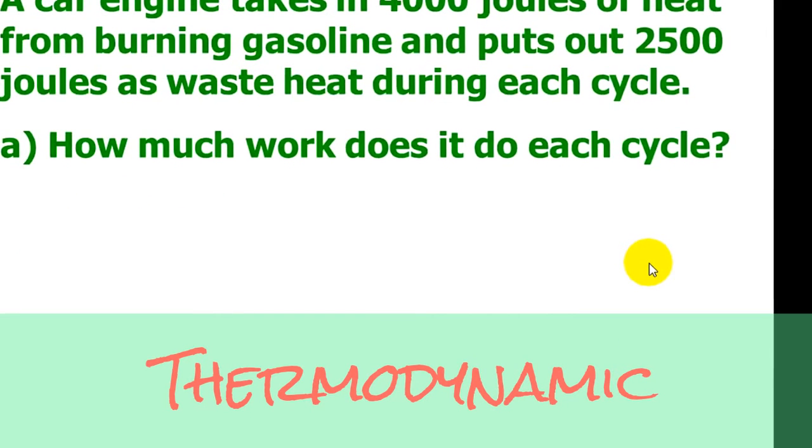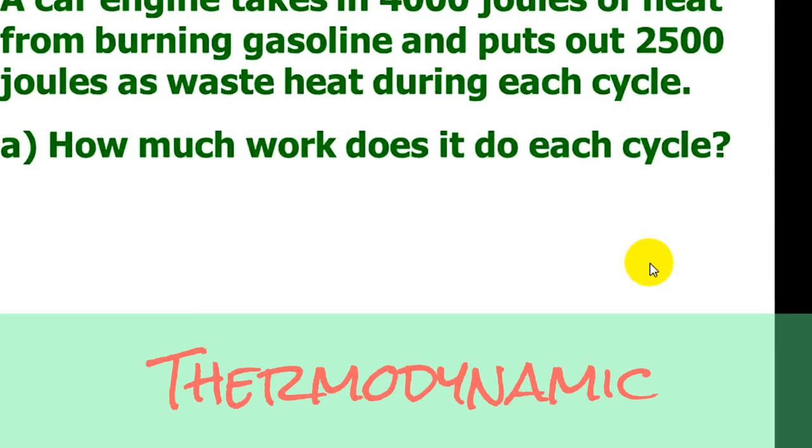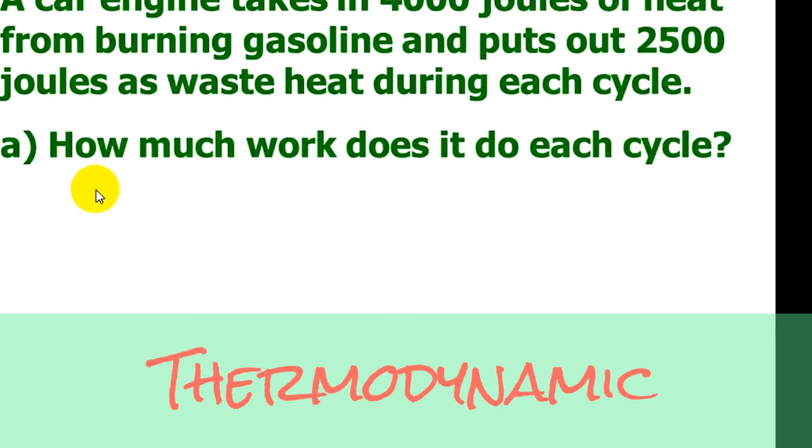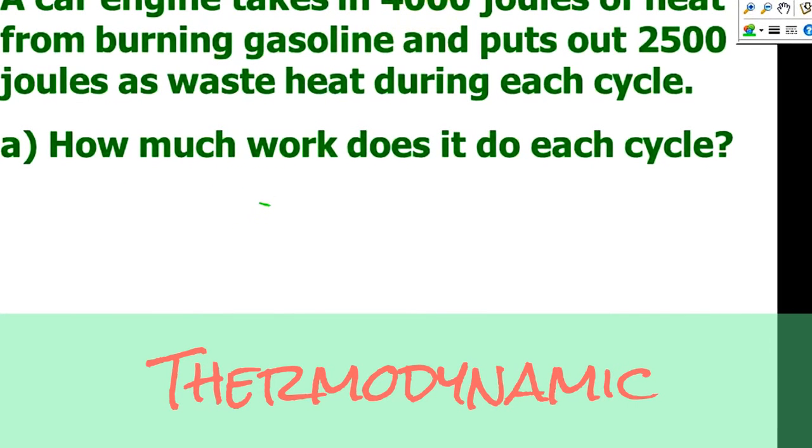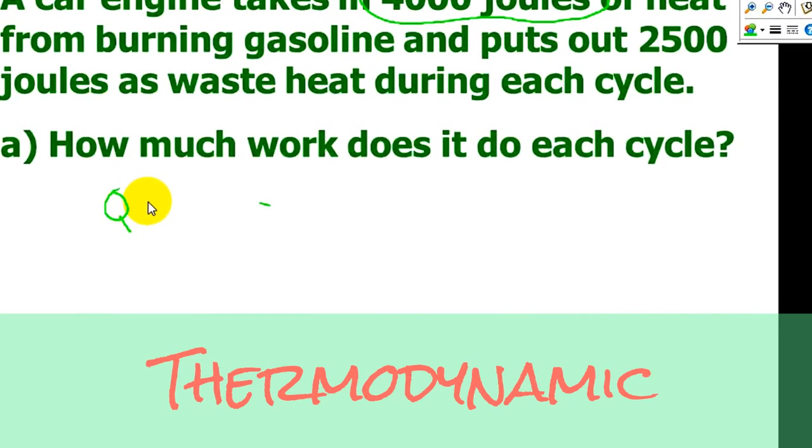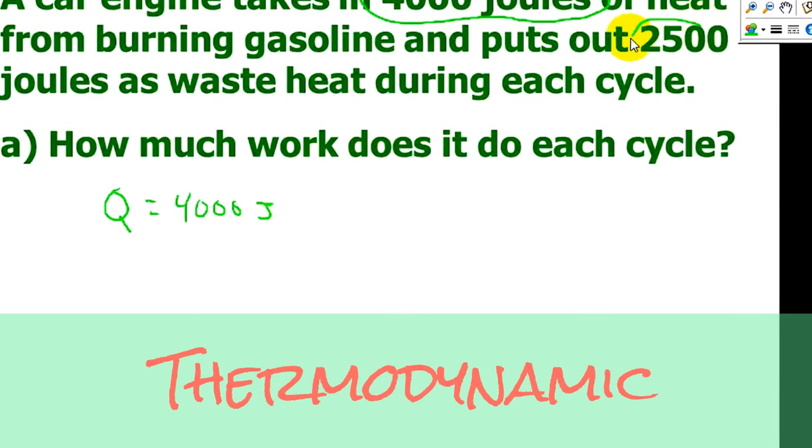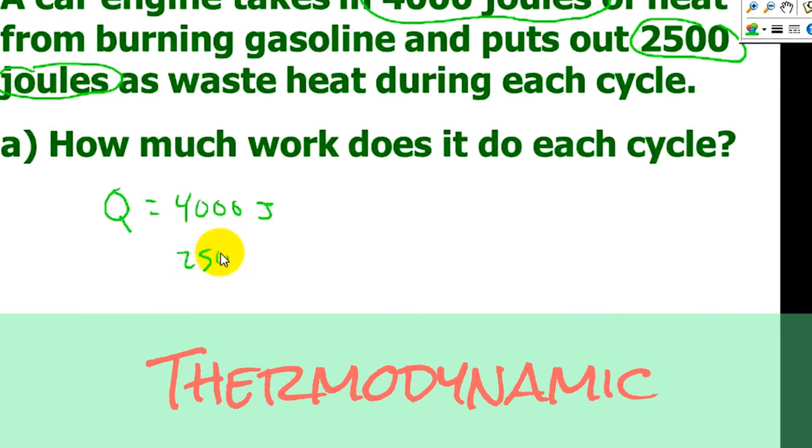Let's do an example. A car engine takes in 4,000 joules of heat from burning gasoline and puts out 2,500 joules as waste heat during each cycle. Part A: how much work does it do each cycle? You should copy this example in your notes. Let's take a look at how we can work through the solution. I'm going to circle 4,000 joules. That looks important. And that's Q because it's heat. I also see 2,500 joules. I'm going to write that down because that's probably part of the calculation I'll need to do.